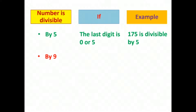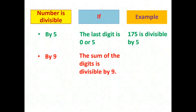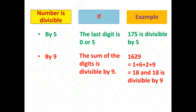The divisibility rule for 9: we have to find the sum of the digits. If the sum is divisible by 9, then the number will be divisible by 9. Here see the example 1629. The sum of the digits is 1 plus 6 plus 2 plus 9 equals 18, and 18 is divisible by 9, so 1629 will also be divisible by 9.